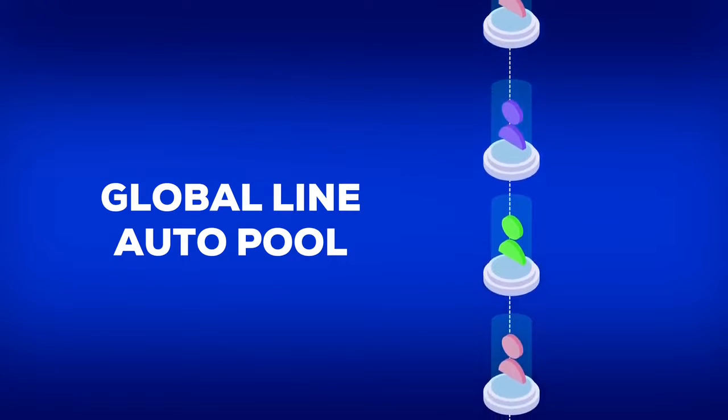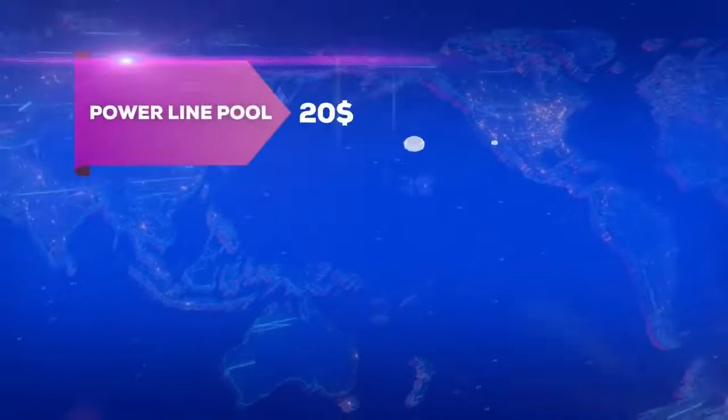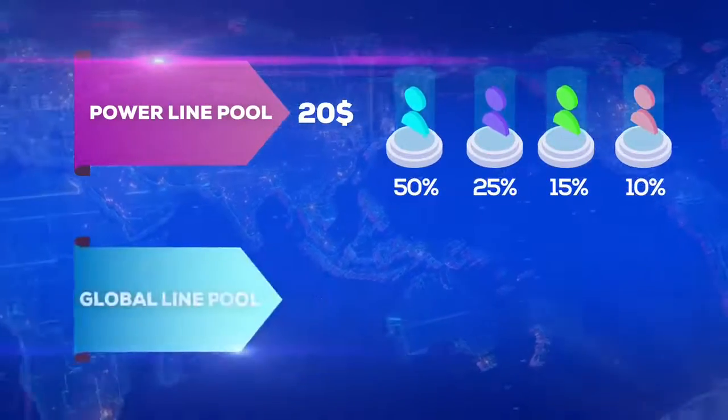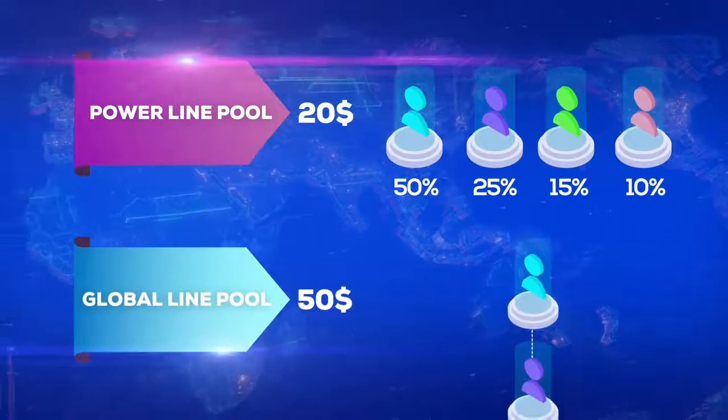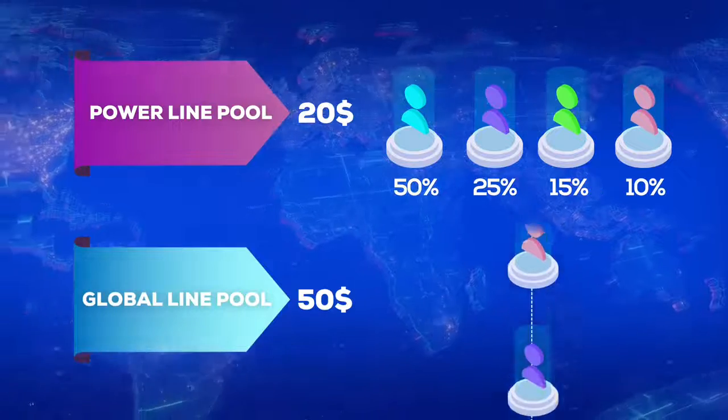This makes it self-sustaining for long-term residual income. The power line pool is only $20. The global pool is only $50 and you can purchase multiple positions to maximize the leverage of the whole company.